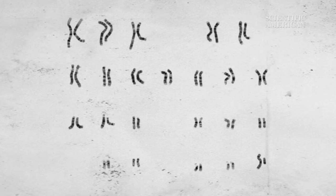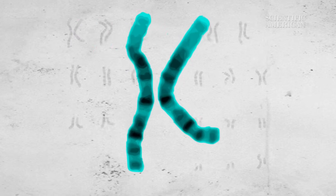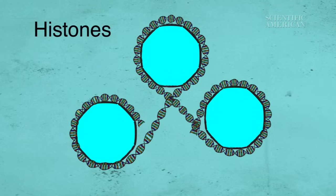The next level up is the chromosome. Humans have 46 of these, arranged in pairs. Chromosomes are long strands of DNA wrapped around beach ball-like proteins called histones.